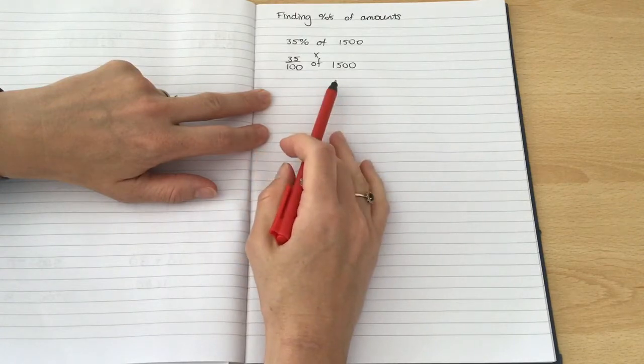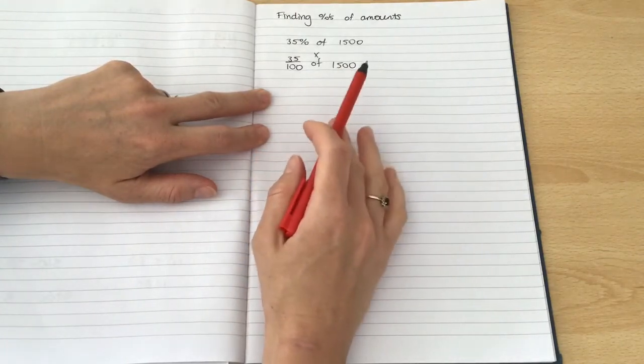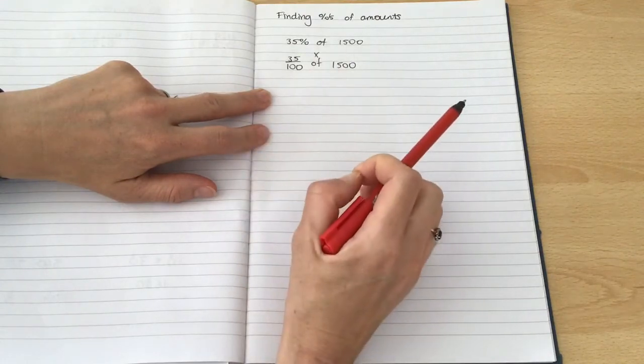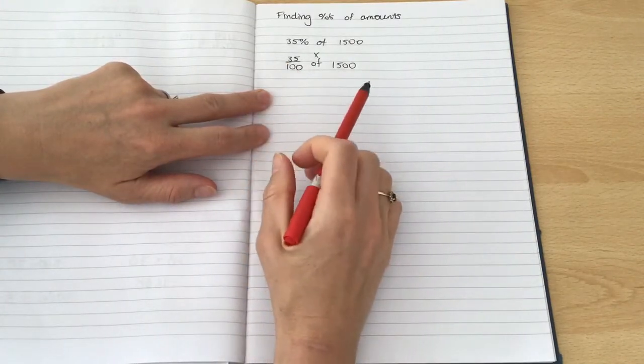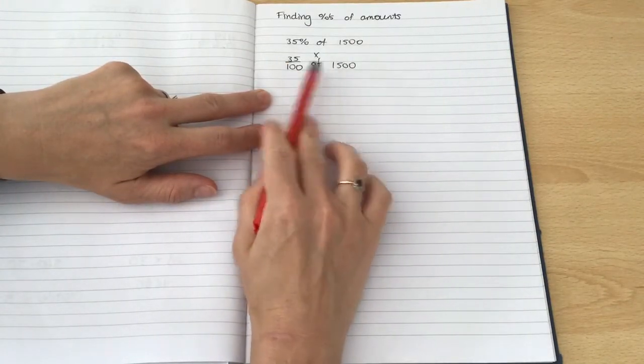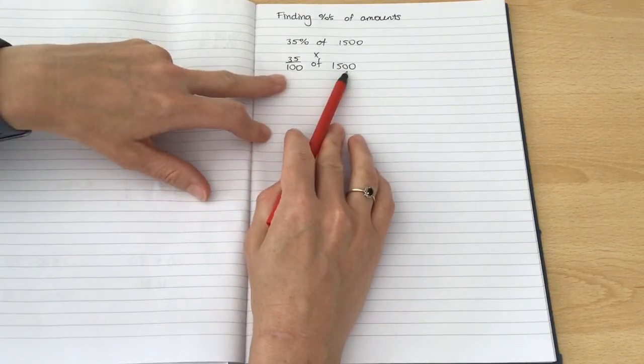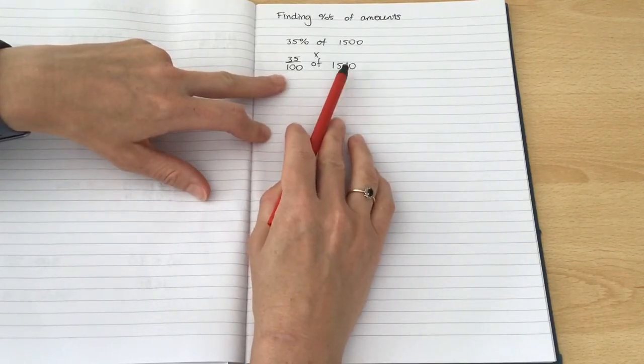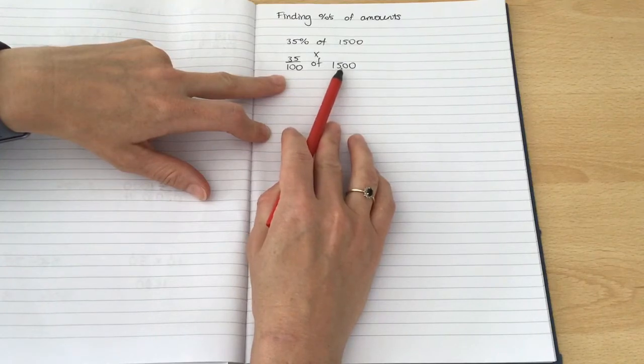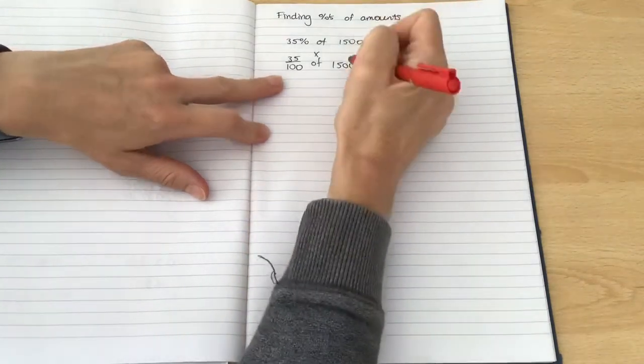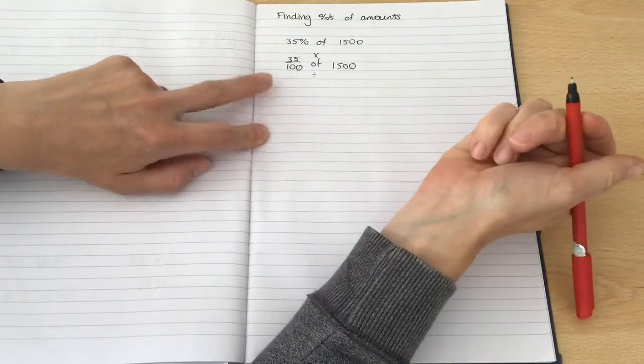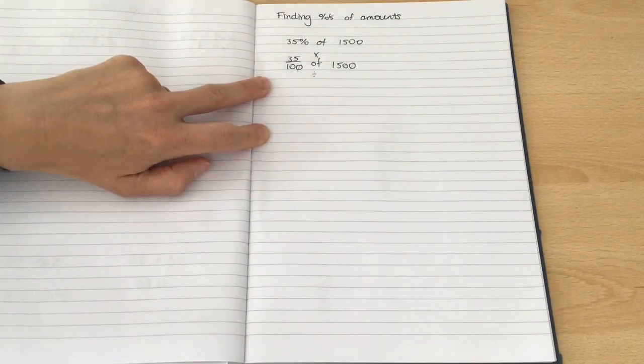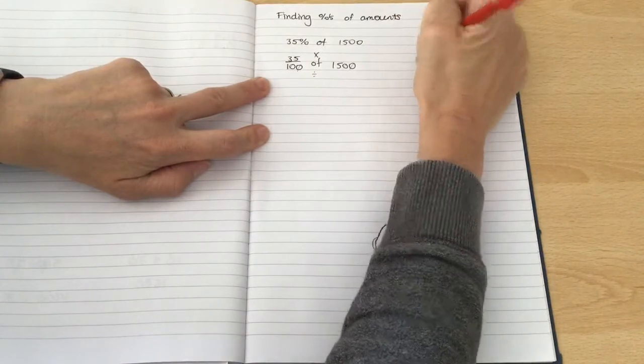So there are two ways that you can do this. Number one is that you can do 1500 divided by the denominator times it by the numerator or you can do it the other way around. I know by looking at this that these have two zeros on the end, both of them do. So actually I can cancel down those zeros and end up doing 15 divided by 1 which leaves me with 15. So the only calculation that I'm going to have to do in order to solve this is 15 times 35.